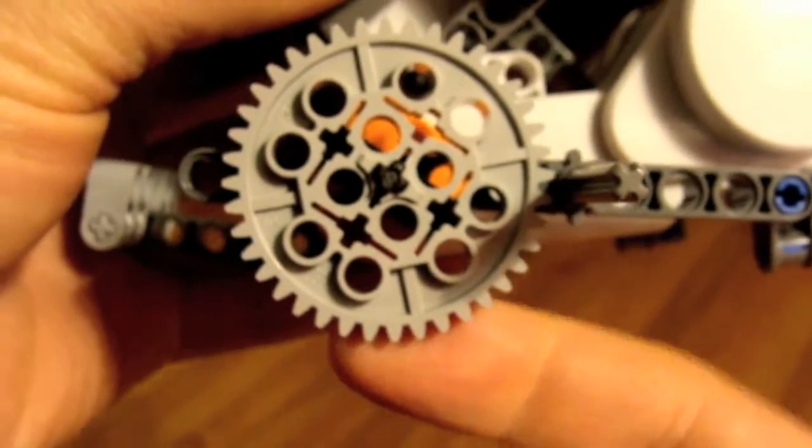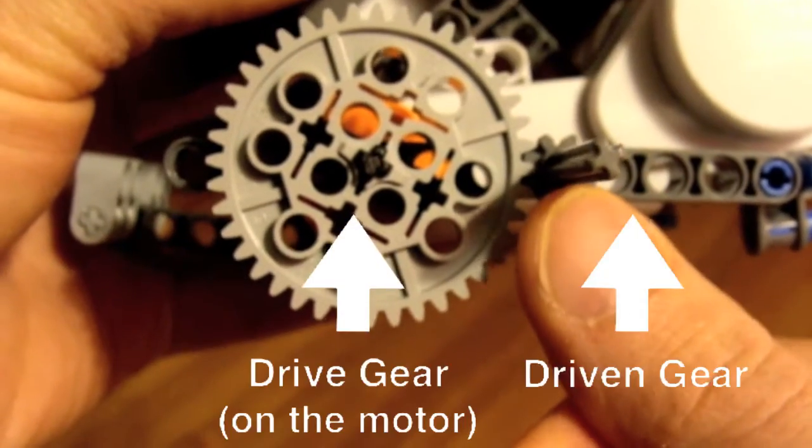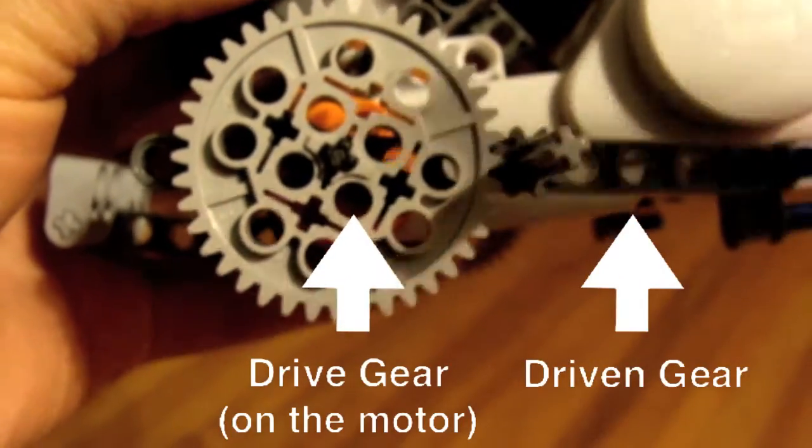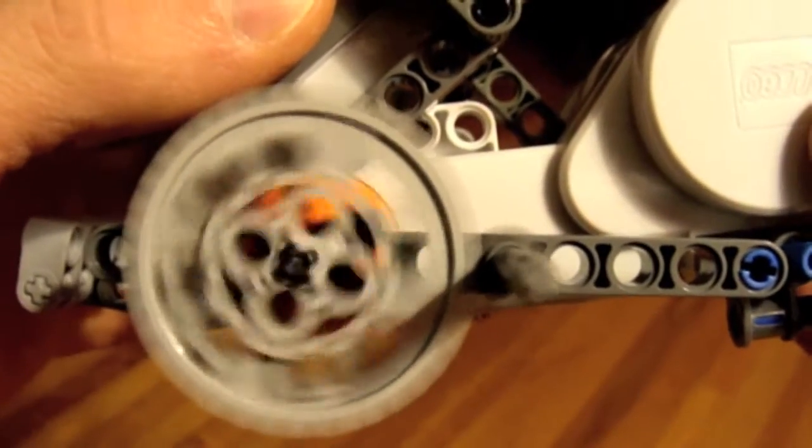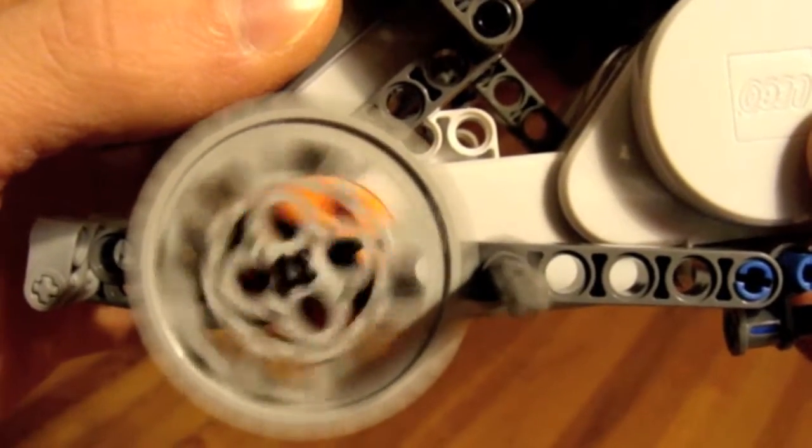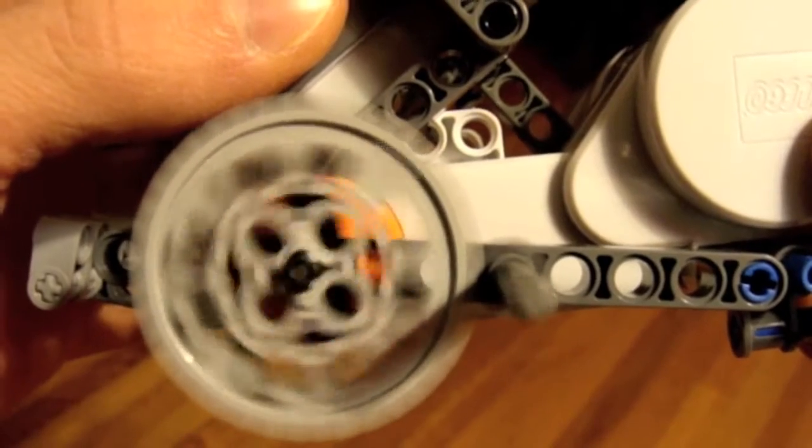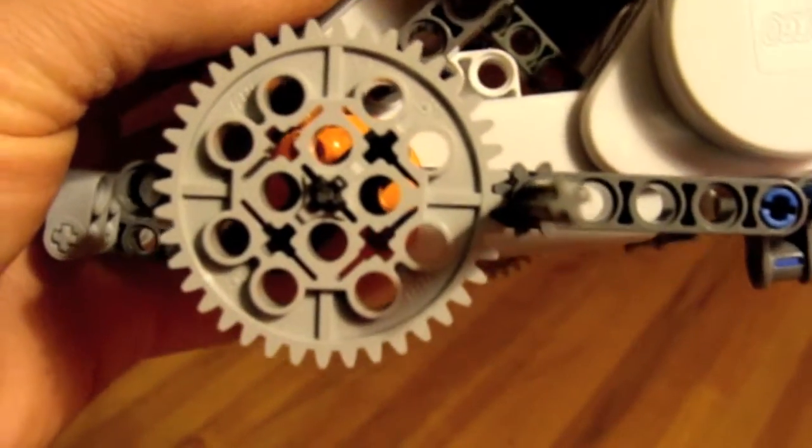Now the large gear is the drive gear because it's on the motor, and the small gear is being turned by that drive gear, so it's called the driven gear. As you can see, that driven gear is moving very fast.